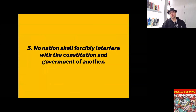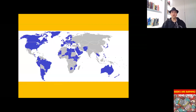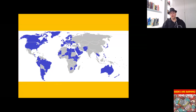Moving on to preliminary article number five: no nation shall forcibly interfere with the constitution and government of another. Here's a map of the globe — those of you watching can see the blue sections, which show all the countries where there are US military bases. You've got all of North America, a good part of South America, Australia, New Zealand, parts of East Asia, the Middle East, all over Europe, and Africa.